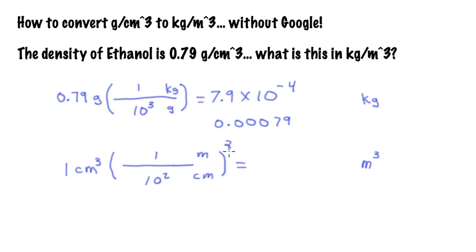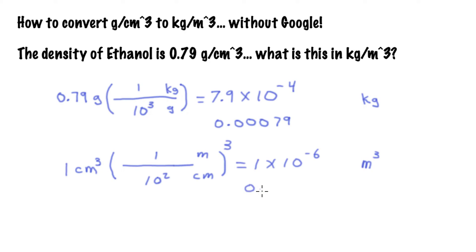The trick here is to remember that if you're converting a unit that's cubed — or squared, for example, in the case of area — then whatever the standard conversion factor is, you have to cube or square that conversion factor. So that would end up with 1 times 10 to the minus 6 cubic meters. And if you wanted to write that out the long way, you've got a lot of zeros to write — five zeros and then the 1. So the scientific notation is way more compact, and I hope you can get used to using it.